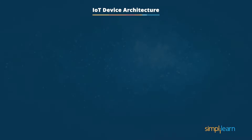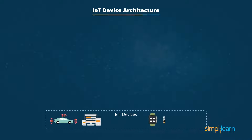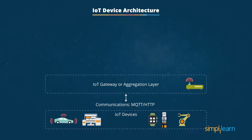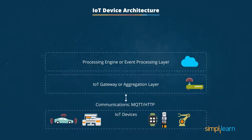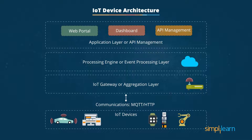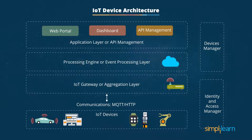There are four layers in IoT device architecture. The base layer consists of IoT devices including all components like sensors, with the ability to sense, compute, and connect to other devices. The second layer is the IoT gateway or aggregation layer, which aggregates data from various sensors. These two layers form the definition engine and set rules for data aggregation. The third layer is the cloud-based processing engine or event processing layer, with algorithms and data processing elements displayed on a dashboard. The last layer is the application layer or API management layer, acting as an interface between third-party applications and infrastructure. The entire landscape is supported by device managers and identity and access managers for security.